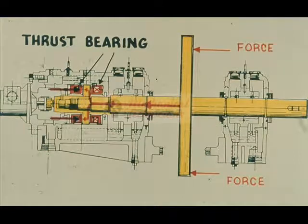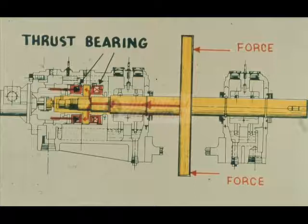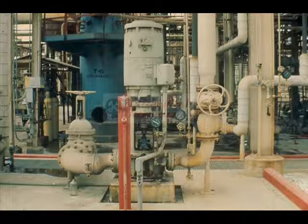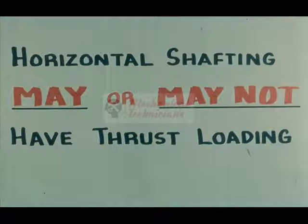The position of the rotating shaft within the machine must be maintained by thrust bearings exerting an equal but opposite force upon a thrust collar locked to the shaft. In machines with vertical shafting, axial loads are more or less always encountered and are usually in one direction only. In addition to forces caused by liquid and gas pressures, the weight of the rotating assembly itself must be supported. In machines with horizontal shafting, axial loads may or may not be encountered.